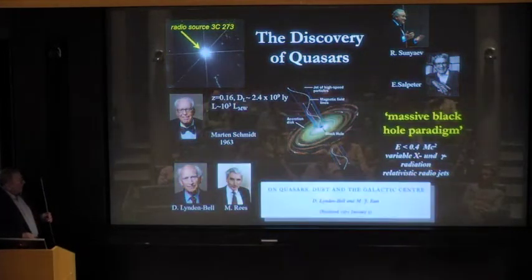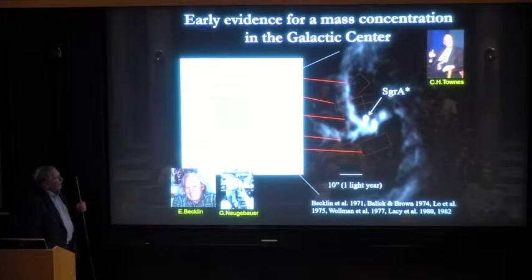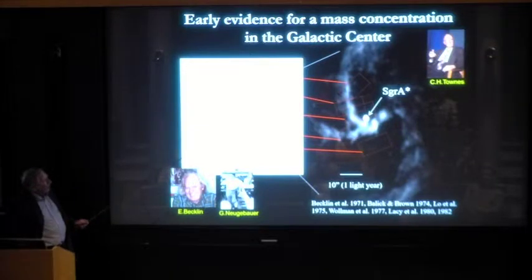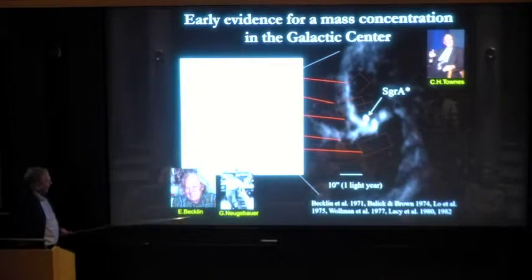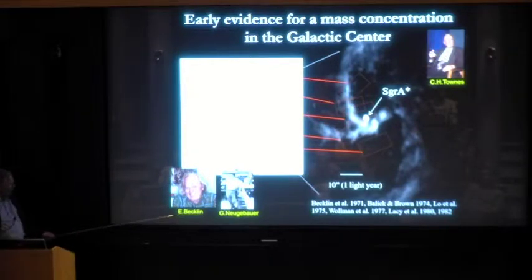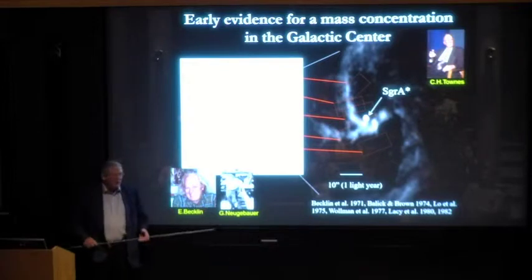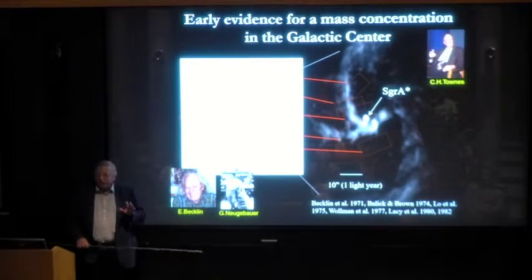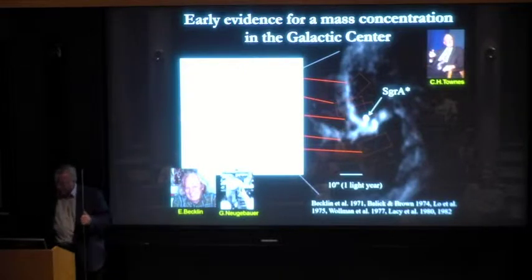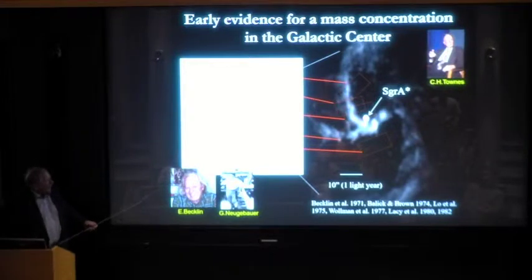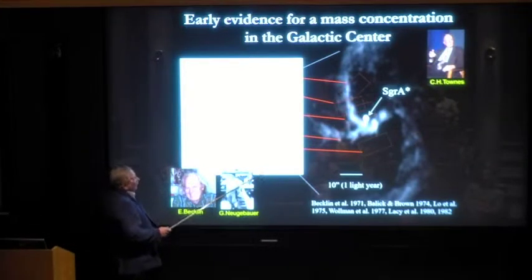Charlie Townes, famous for his Nobel-winning work on the Maser and Laser in Berkeley in the 1960s and early 70s, started to get interested in this project. Likewise, down at Caltech, Gary Neugebauer and Eric Becklin, his student, also started to get interested in the galactic center. They then proved by infrared measurements that the galactic center was a very strong source in the near infrared and showed that this was due to a star cluster of about 10 million solar masses over several tens of parsecs.